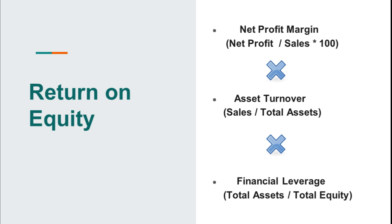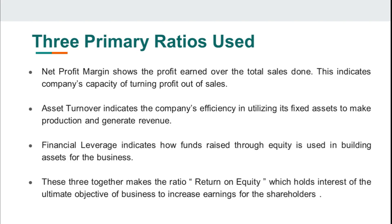Net profit margin shows the profit earned over the total sales done — how much sales the company has made and how much profit the company is able to generate out of those sales. Not every time a company makes sales does it go into profit. So how profit is increasing over time in accordance with sales — this is what we analyze through net profit margin. It also indicates the company's capacity of turning profit out of sales.